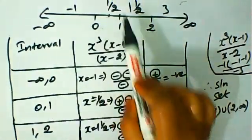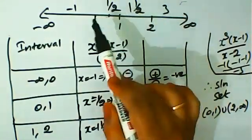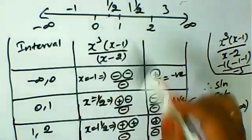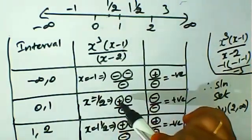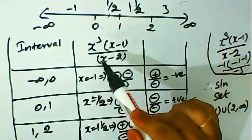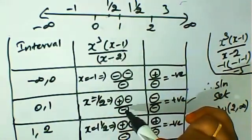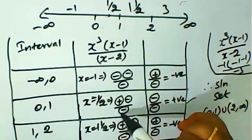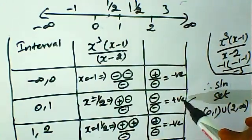For the interval 0 to 1, we choose x equals one-half (0.5). x cubed gives a positive value. x minus 1 gives minus one-half, which is negative. x minus 2 gives minus, which is negative. Minus times minus gives plus, so the result is positive.